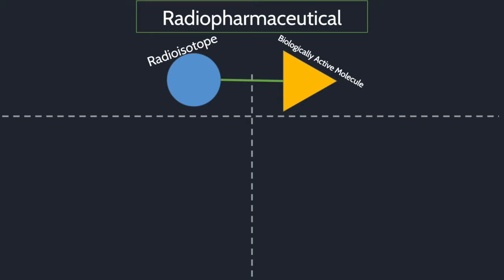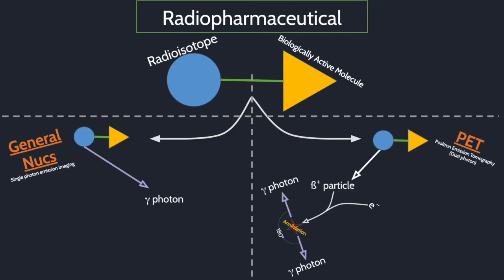Nuclear medicine comes in two distinct flavors, so-called general nukes and PET. At the end of the day though, they both emit gamma photons but get to the outcome in different ways.